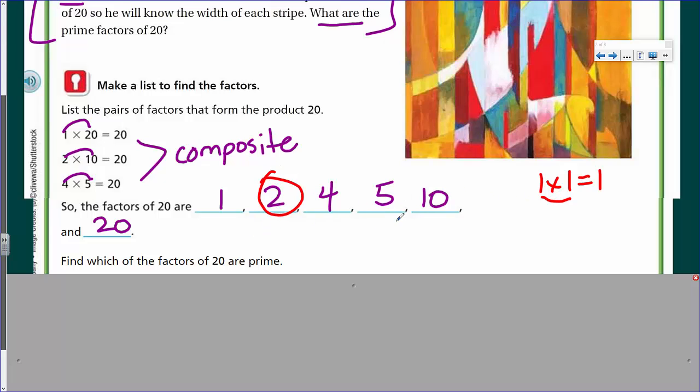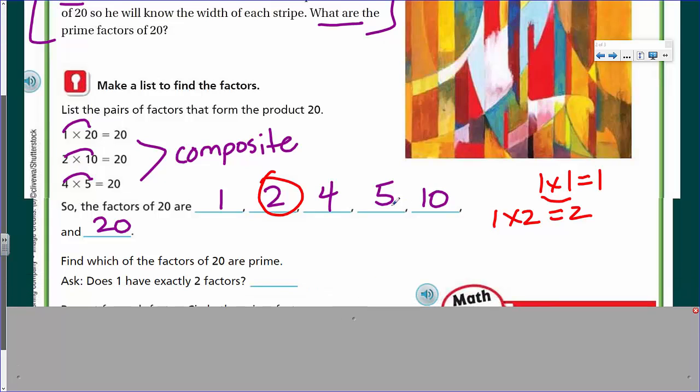However, 2, we know is a prime number because 1 times 2 equals 2. It has exactly 2 factors, and there are no others. Therefore, it has to be prime. 4, on the other hand, no. If I list 4, you could do 1 times 4, and you could do 2 times 2. Well, 1 times 4, and then 2 times 2, you can see it has 1, 2, 3 factors. We don't repeat the 2. It's already been listed. Therefore, 4, sorry, you are composite. 5, you're prime, because 1 times 5 equals 5, and again, there are no others. But with 10, you could do 1 times 10. You could do 2 times 5. That will give you 10. 20, of course, we know there's lots of factors.